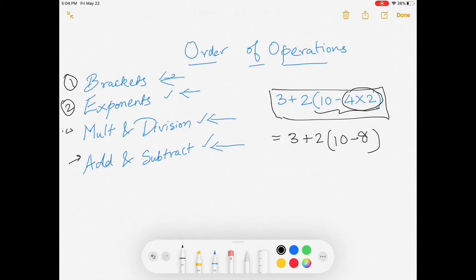Now, what else is left inside the brackets? 10 minus 8, which is going to be 2. So we'll do that. And then, now we are done with the brackets, but notice what this is: 2 and brackets 2. When there is no sign between a number and a bracket, then that means there is a multiplication. So this is actually 2 multiplied by 2.